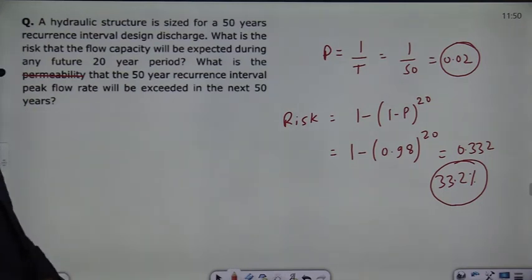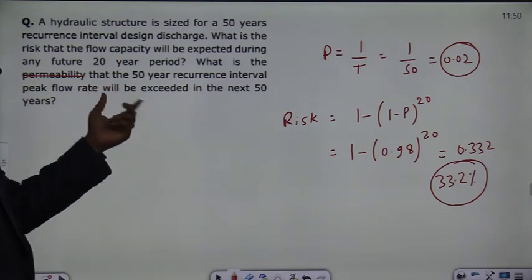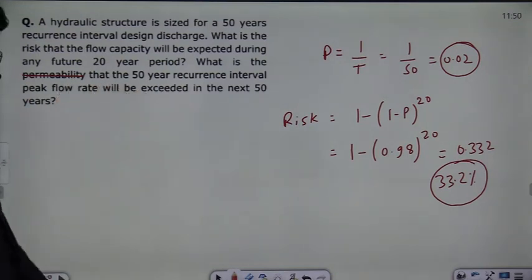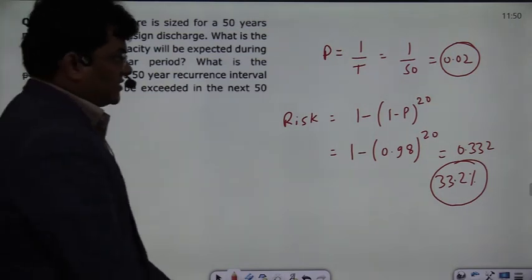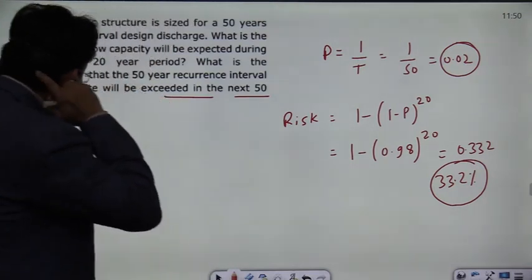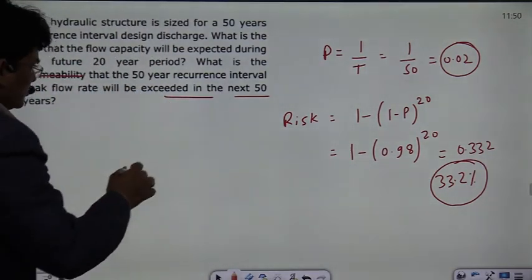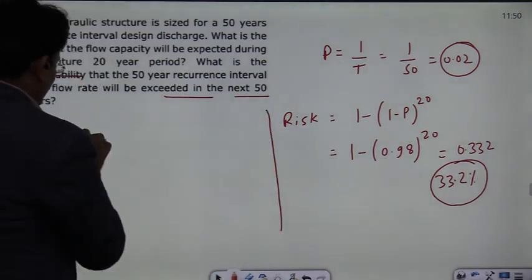From the back end, the question has been asked that in the next 50 years, your flow will be exceeded. You have to tell the chances that the flow that you have designed will be exceeded in the next 50 years. So basically, you have been asked the risk in this question.